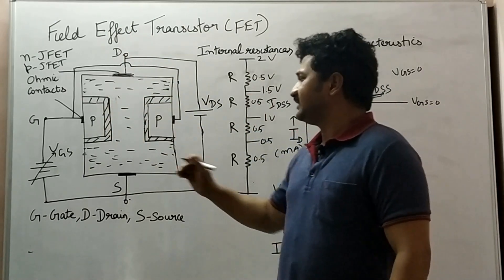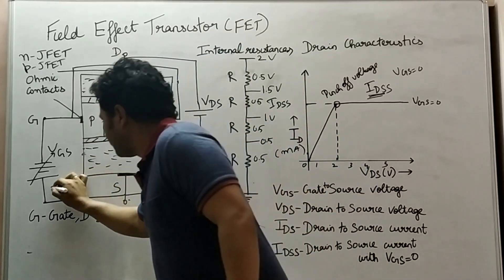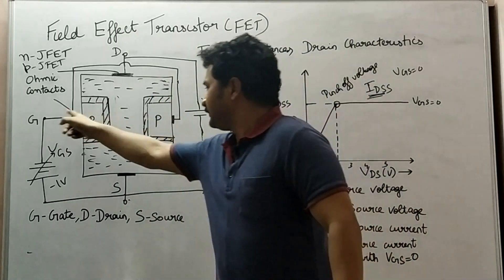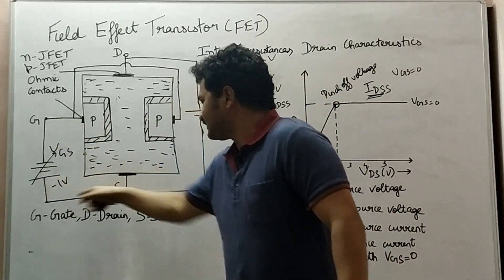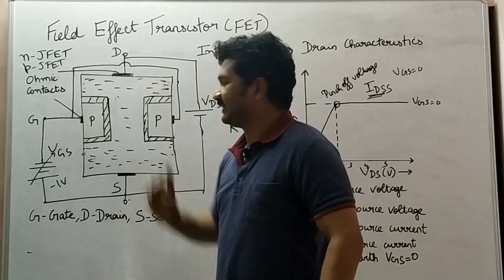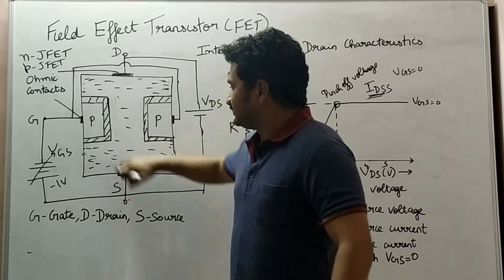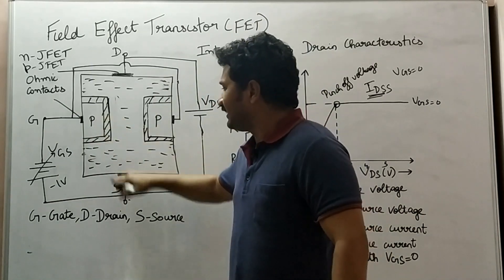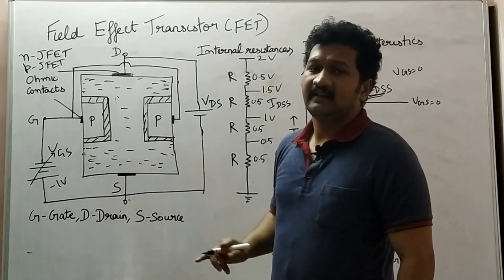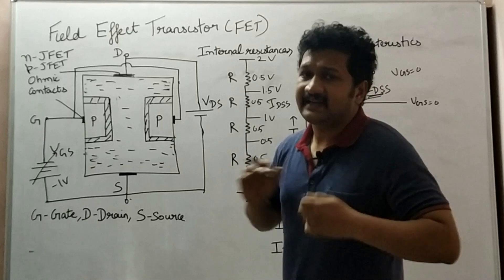We are applying a negative gate-to-source voltage — for example, minus one volt. The P layer is connected to negative and the source is connected to positive, so this PN junction is reverse biased. Both P layers are connected to negative. Under reverse bias conditions, the depletion layer increases.